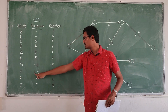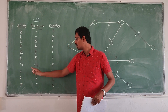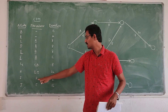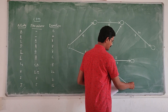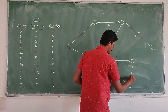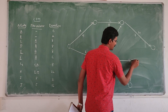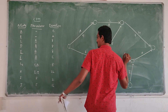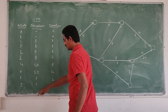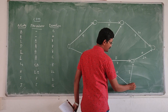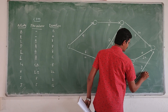Next is H activity. The precedence is E and I. First we have to draw the I activity, and after that we can draw H. For I, F is the precedence activity. Now we can draw the I activity, and then we can draw the H activity. The H activity duration is 12.